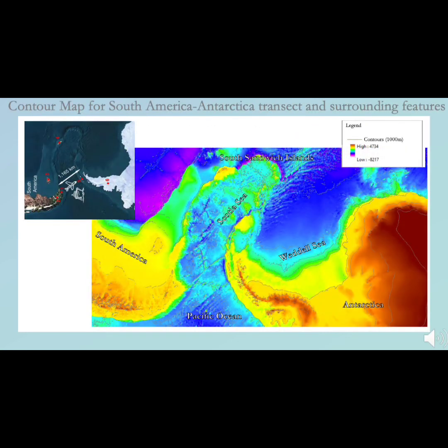This slide was made in Arc Scene and shows the bathymetry and topography of the region situated between South America and Antarctica. Elevated regions are indicated in warmer colors such as reds and yellows, whilst deeper regions are colored in purples and blues. The reds and yellows represent continental land, whilst blues and purples indicate ocean basins. This makes it easy to see where the continental shelves, ocean basins, and islands lie in this region.